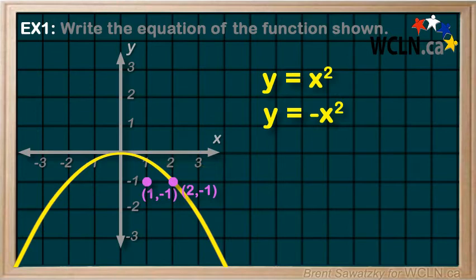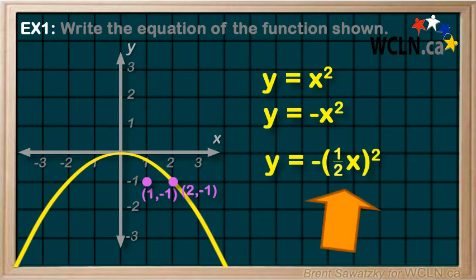To describe this horizontal expansion, we'll recognize that the multiplier is 2. The x value was multiplied by 2. So, the reciprocal of 2 is 1 half. And that's our coefficient in with the x here.